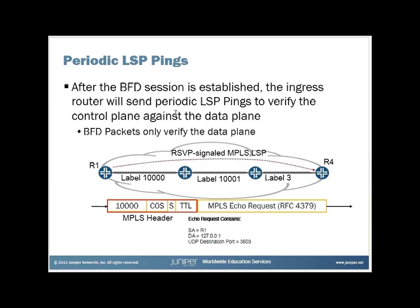BFD alone only checks the data plane — specifically the state of the LSP's data plane, not the control plane. Along with BFD, whenever BFD is turned on, a periodic set of LSP pings is automatically enabled. By default it's every 60 seconds. R1 will send an MPLS ping across the RSVP-signaled MPLS-LSP to R4 to verify the control plane against the data plane — just one extra level of checking.